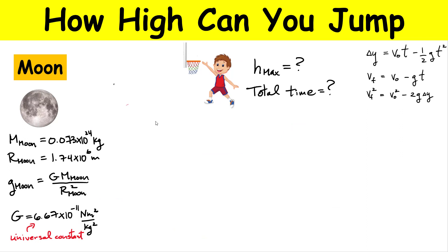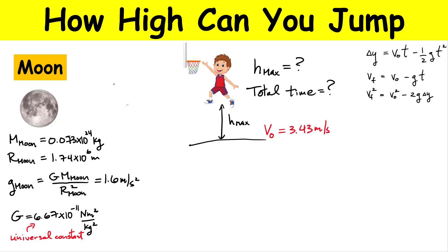Let's look at the Moon. It has a much smaller mass — 0.073 times 10 to the 24 kilograms — and a smaller radius. Substituting those values into the gravity equation, you get approximately 1.6 meters per second squared, about one-sixth the value on Earth. We're interested in the maximum height and total flight time. It's certainly going to be longer because little g is small. One assumption we make is that we have the same initial velocity as on Earth — 3.43 meters per second — and that itself is an approximation.